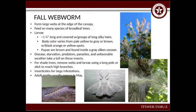The first thing we're going to talk about is the fall webworm. These form large webs in the canopy of the trees. Their larvae are approximately one to one-and-a-quarter inches with groups of long, silky hairs. Body color can vary from yellow to brown, and it also has black or orange-yellow spots on it. These are brown and found inside a gray, silky cocoon. Disease, starvation, predators, parasites, and unfavorable weather take a toll on these insects. For shade trees, you want to remove the webs. Insecticides are recommended for large infestations; if it's just a small infestation, you don't necessarily need to worry about it.